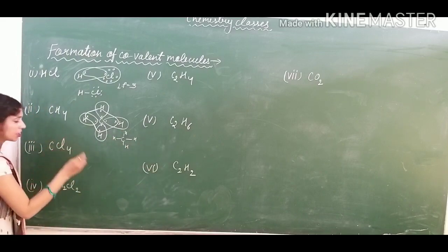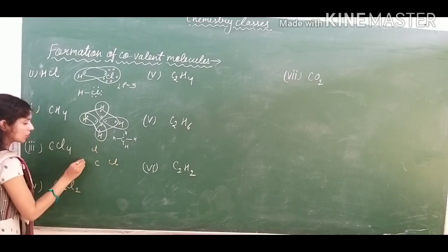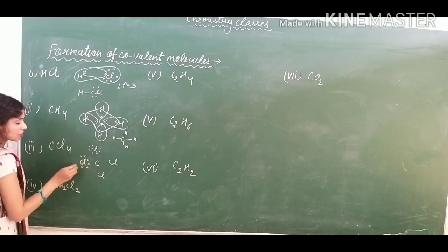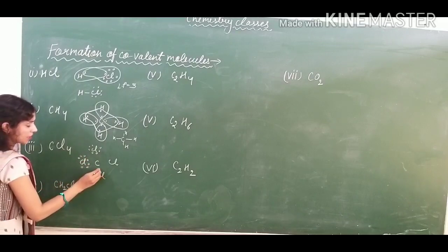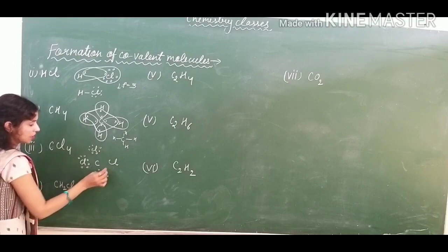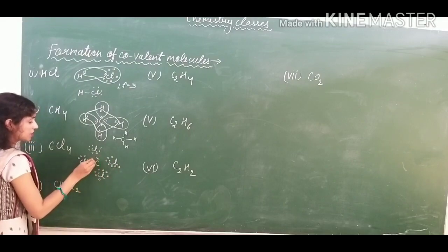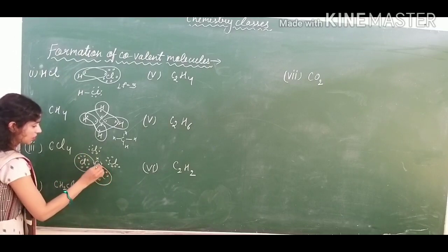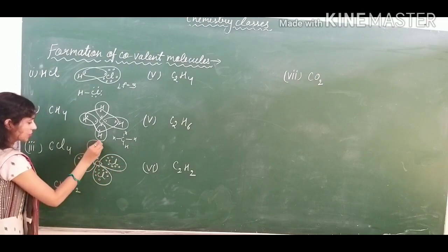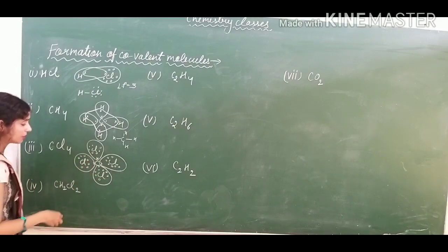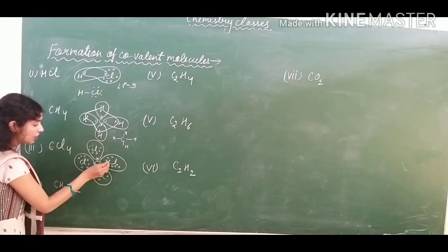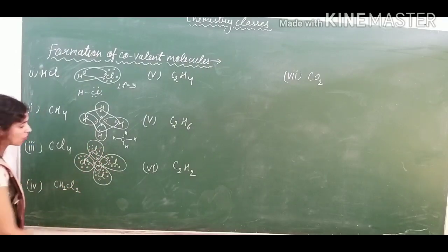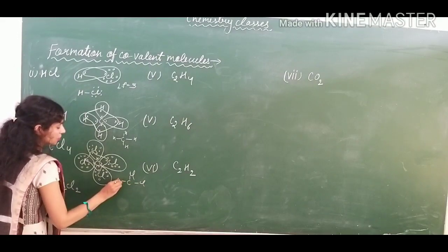Now let's talk about CF4, carbon tetrafluoride. Carbon you have to keep in the center and four fluorines you can put around it. You have to mention the valence electrons of fluorine — fluorine has 7 valence electrons. And four electrons are to be mentioned around the carbon. They will complete their octet like this. Four electrons are already present around the carbon and they need to share four electrons to complete their octet. So each fluorine shares one electron with carbon. Total eight electrons now carbon has got. The bonded structure is like this — four single bonds between carbon and each fluorine.